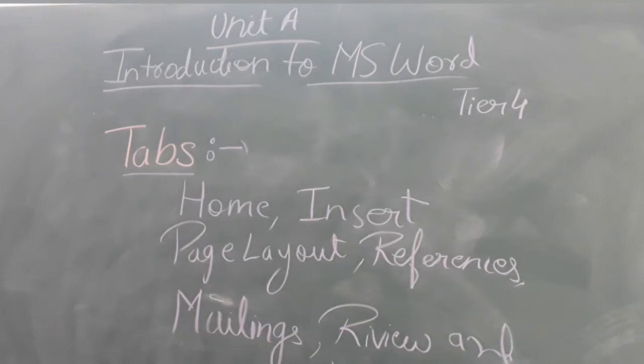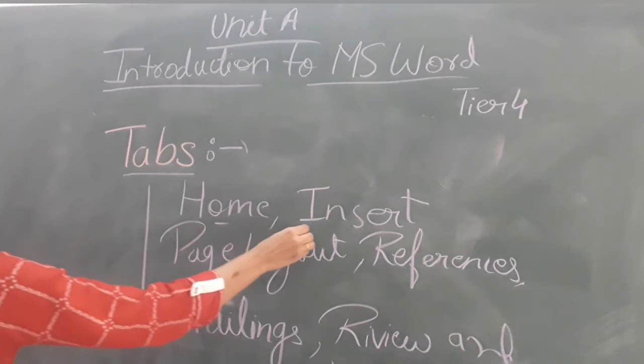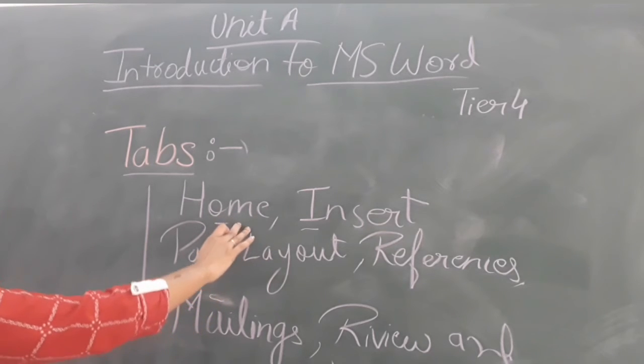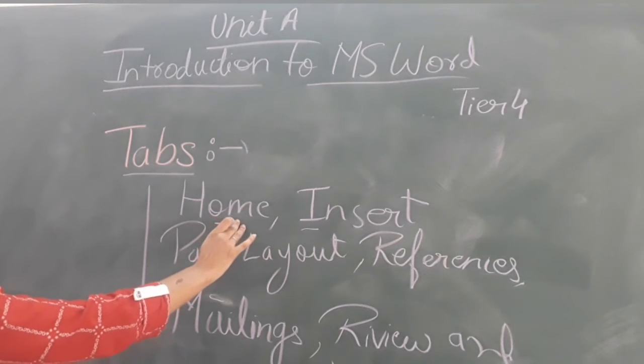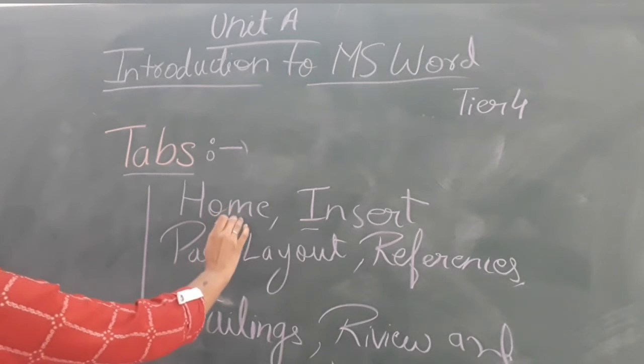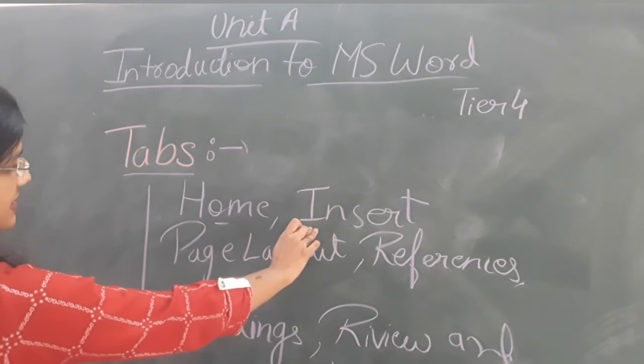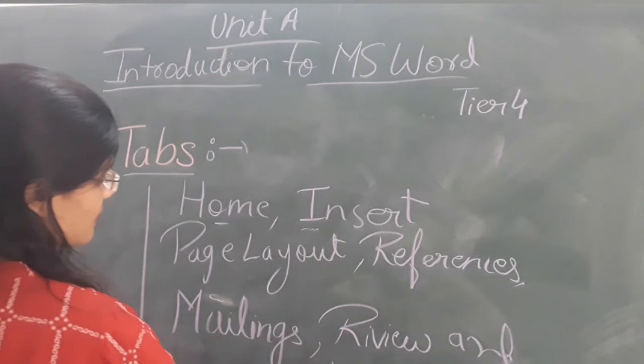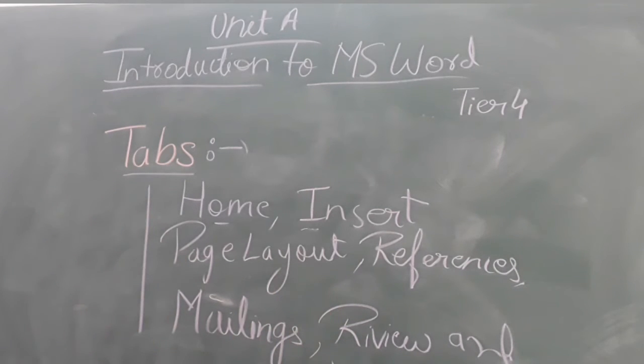So these are the tabs which are present whenever you will be opening your MS Word screen. So these all are having some of the other functions such as on Home tab, what you can do is you can do the editing part of your writing. Means you can change the font, style, size. In Insert, you can insert the images, Page Layout, you can select the Page Layout either in Landscape or Portrait mode. Or References, Mailings, Review, and View. These all are having some or the other particular functions.